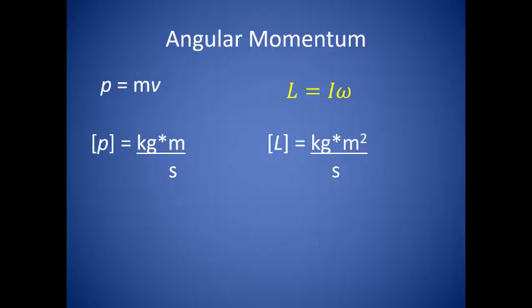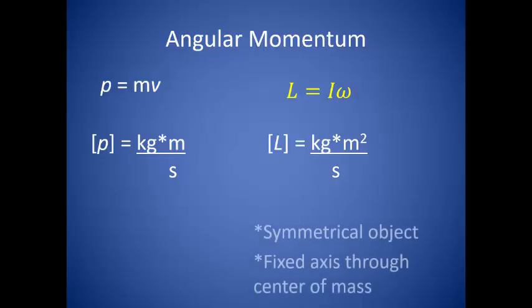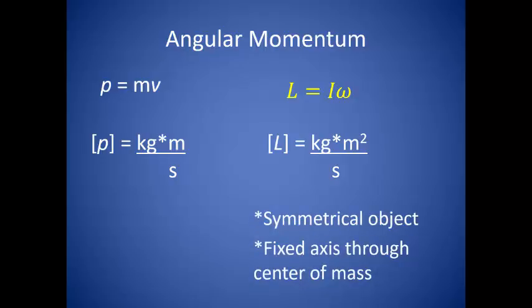Linear momentum was defined as the mass of an object times its velocity. So to describe angular momentum, we use the angular analog to mass, which we defined as the moment of inertia, multiplied by the angular analog to velocity, which is angular velocity. This is true for a symmetrical object rotating about a fixed axis through the center of mass, where I is the moment of inertia and omega is the angular velocity.